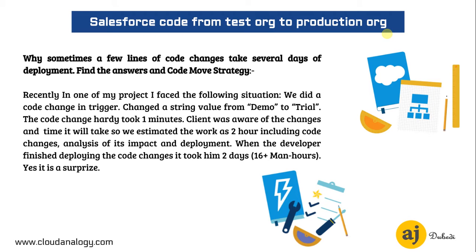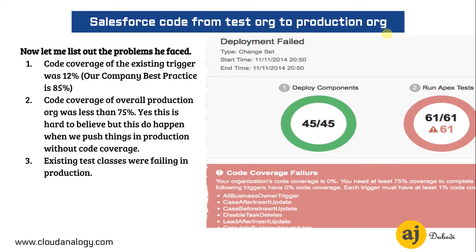Amazingly, when the developer finished deploying the code changes it took him two days — almost 16 plus man-hours. It was a big surprise. We sat down and started discussing what the problems were. The code coverage of the existing trigger in which we did our changes was only 12%, and our company best practice at Cloud Analogy is a minimum of 85% code coverage. Salesforce itself requires more than 0% for triggers and at least 75% for all other classes.